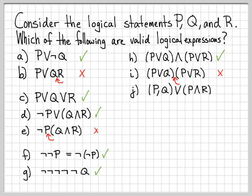What about part J? Everything on one side is okay — we have nice logical connectives between the logical statements. But the problem is we put a comma between two logical statements. What does a comma between logical statements mean? Nothing — that's not something we use or define. Putting a comma between logical statements does not make sense. We can put an and symbol or an or symbol, but we can't put a comma.